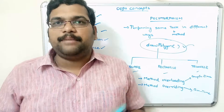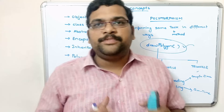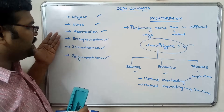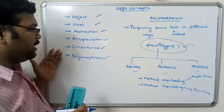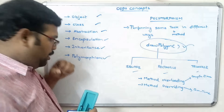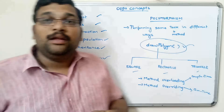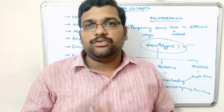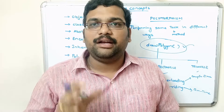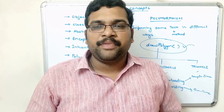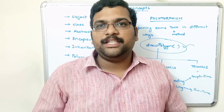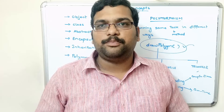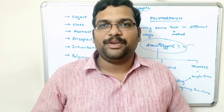So these are the concepts of object-oriented programming: object, class, abstraction, encapsulation, inheritance, and polymorphism. If you have any doubts regarding these OOP concepts, feel free to post in the comment section and I will try to clarify them. If you understood the session, share it with your friends, like it, and don't forget to subscribe to our channel. Thanks for listening, thank you very much.